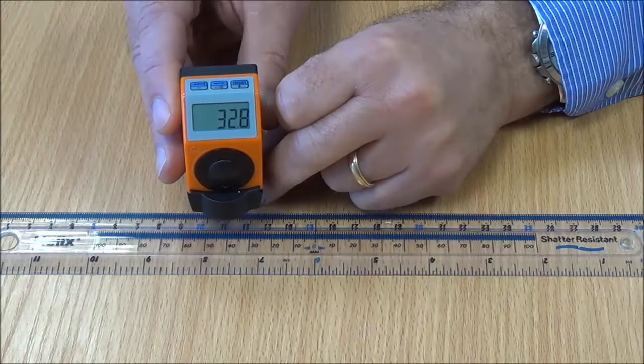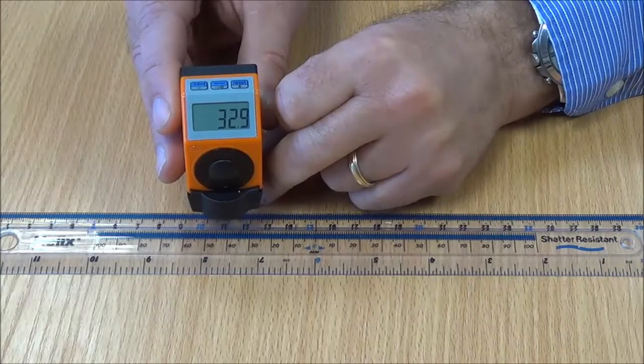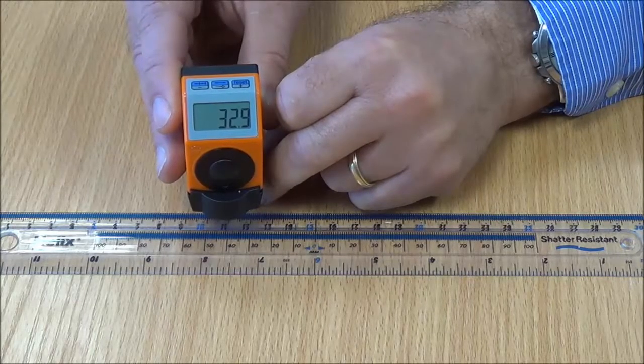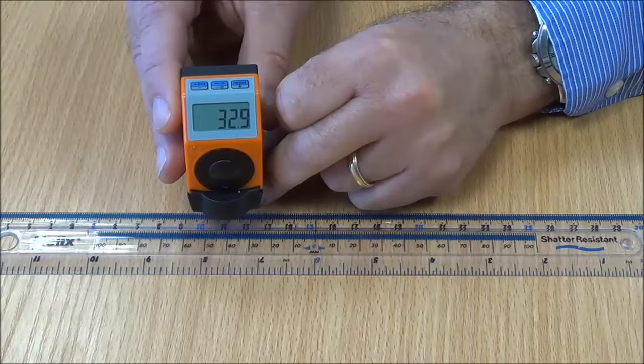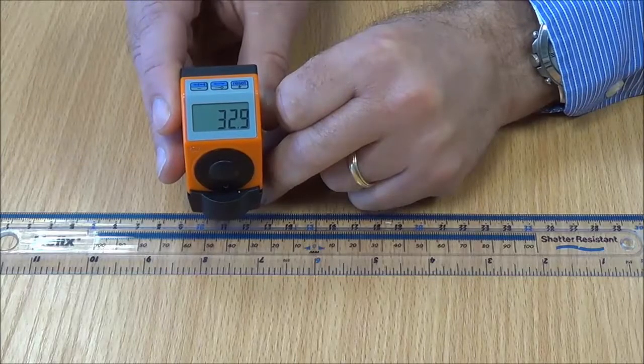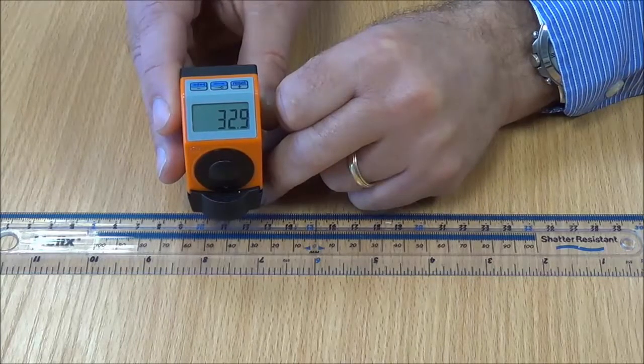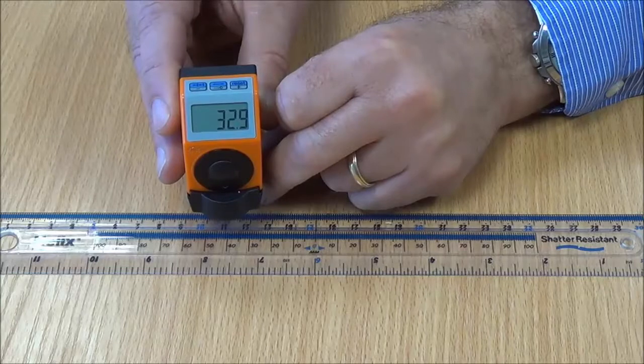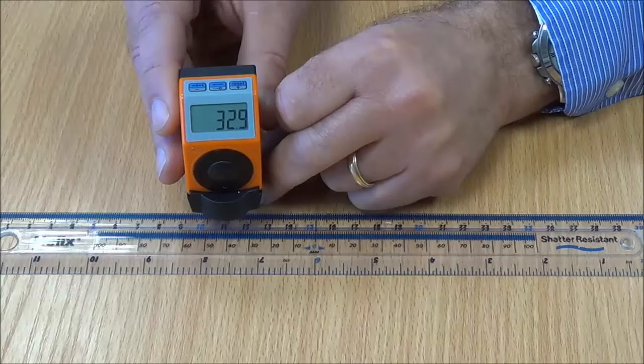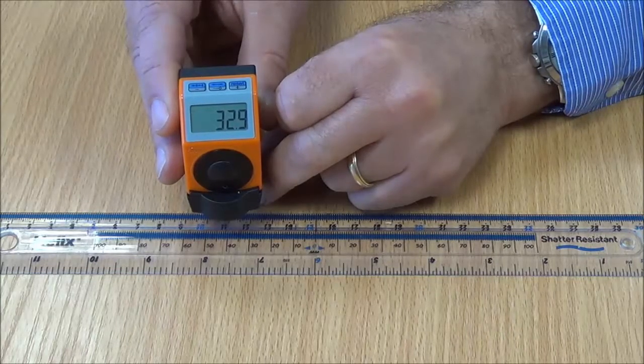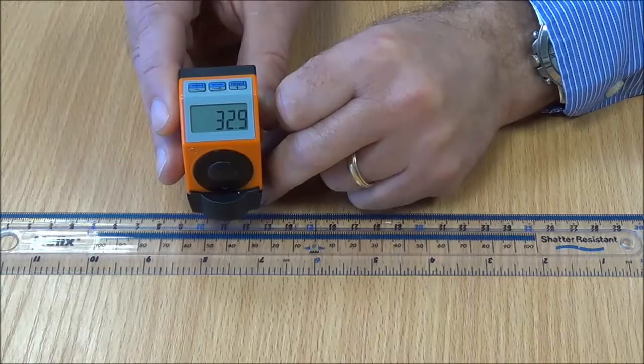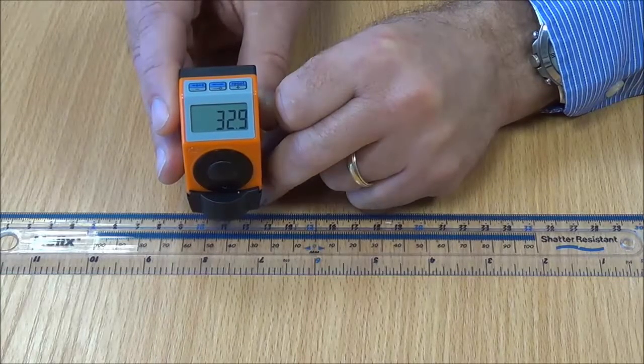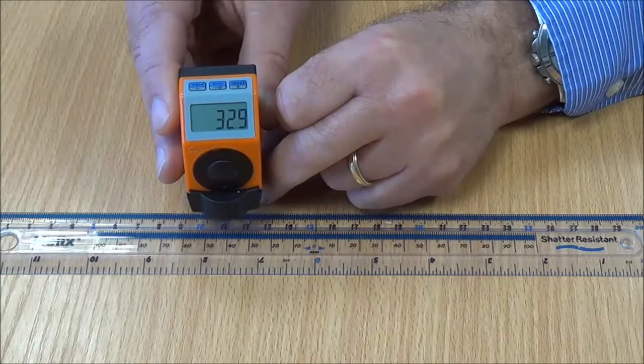We are showing a ruler here, so normally to measure a linear movement on a basic machine you would have a pointer which would move along the scale and you would get a reading. This is very difficult to read because of parallax errors, the operator only being able to read to at best probably half a millimeter and at worst probably a millimeter.